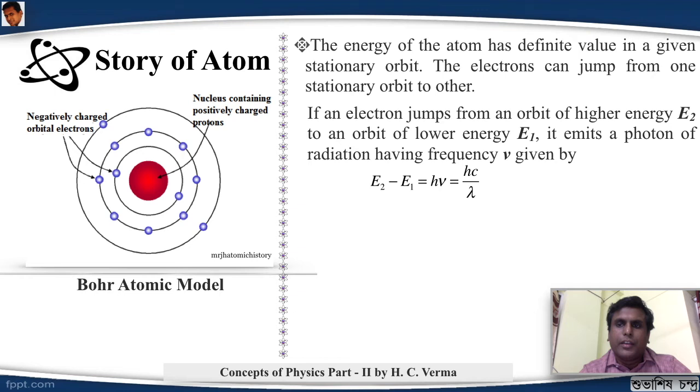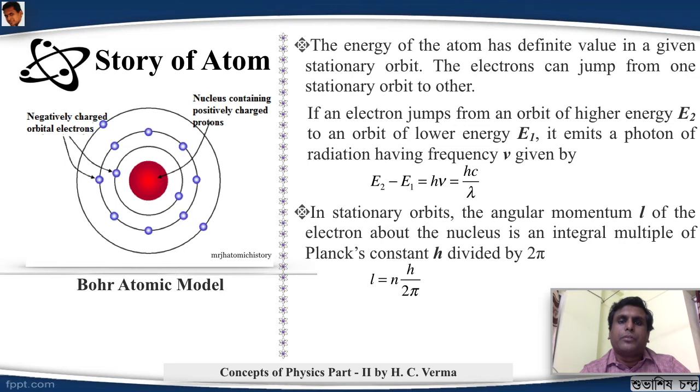In the stationary orbits, the angular momentum of the electron about the nucleus is always integral multiple of Planck's constant divided by 2π, that is h-bar. That is, the angular momentum is quantized. This is called Bohr's quantization rule.